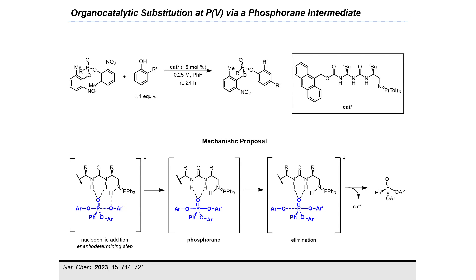Stepwise associative mechanisms have also been explored in synthetic contexts. Dixon and co-workers reported an enantioselective substitution of phosphonate esters that proceeds through a phosphorane intermediate. A bifunctional urea-aminophosphorane catalyzes the enantioselective nucleophilic substitution of diaryl phosphonate esters with ortho-substituted phenols. The catalyst performs electrophilic activation of the phosphonate ester via hydrogen bonding interactions with the phosphonate's P-O bond, while the catalyst's aminophosphorane group activates the phenol as a nucleophile through general base catalysis, leading to enantiodetermining nucleophilic addition to form a phosphorane intermediate, followed by elimination of the leaving group to generate the enantioenriched product.